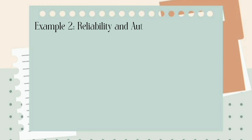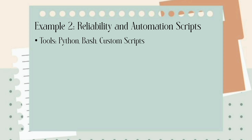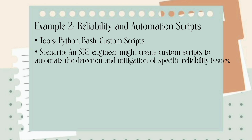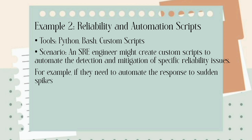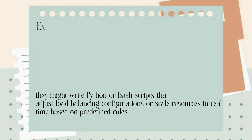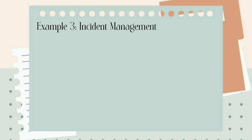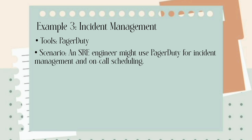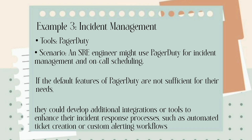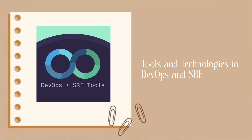A second example would be reliability and automation scripts, using tools like Python, Bash and custom scripts. An SRE engineer might write custom scripts to automate the detection and mitigation of specific reliability issues. For example, if they need to automate the response to sudden spikes in traffic, they might write Python or Bash scripts that adjust load balancing configurations or scale resources in real time based on predefined rules. For incident management, SRE engineers might use PagerDuty. If the default features are not sufficient, they could develop additional integrations or tools to enhance their incident response process, such as automated ticket creation or custom alerting workflows.